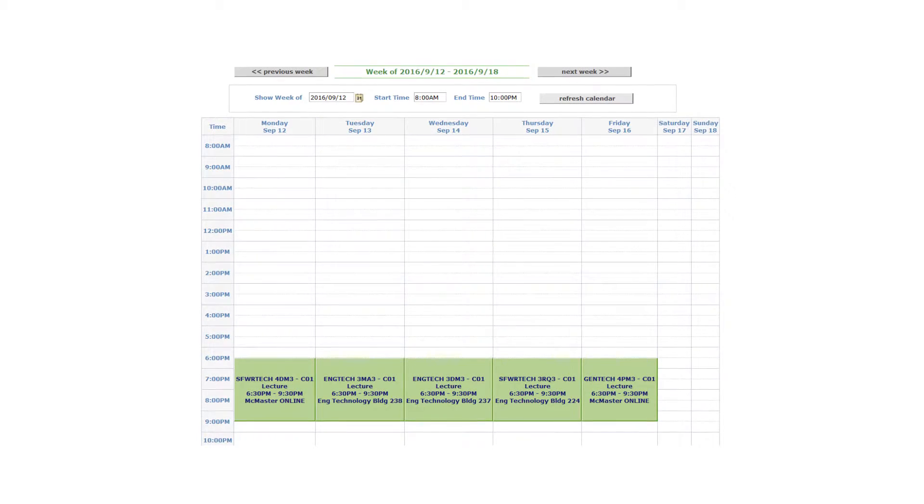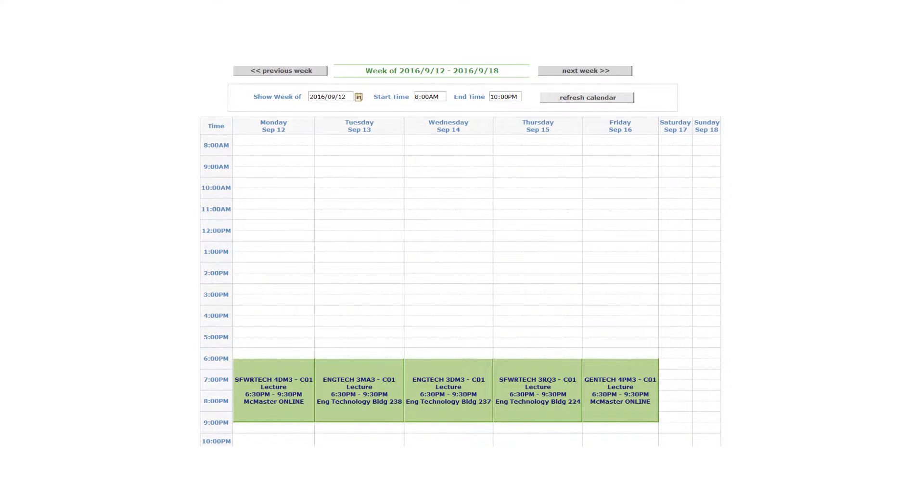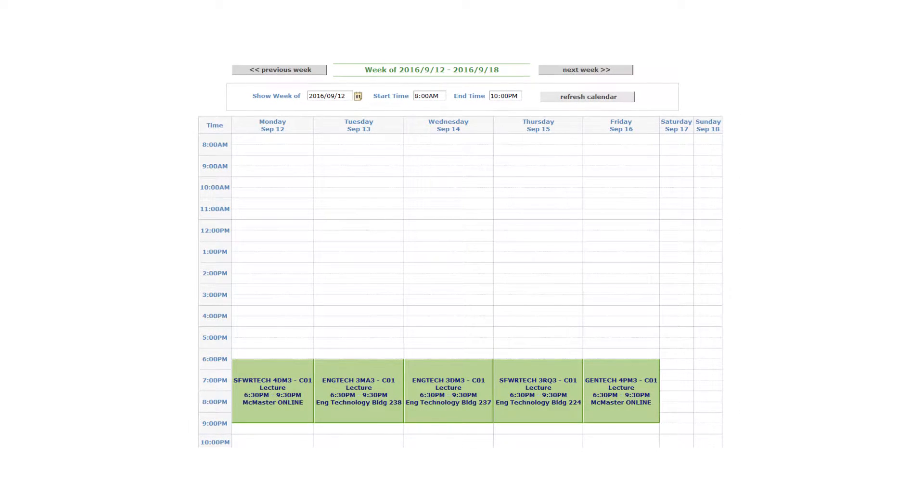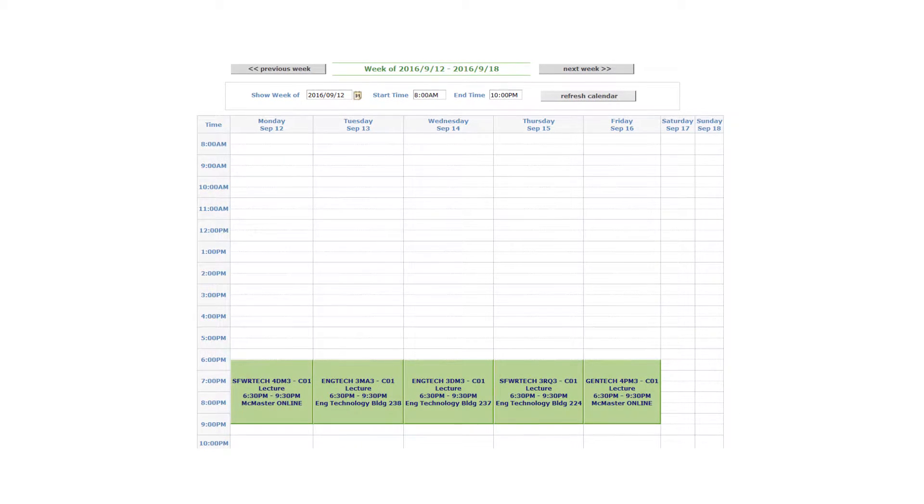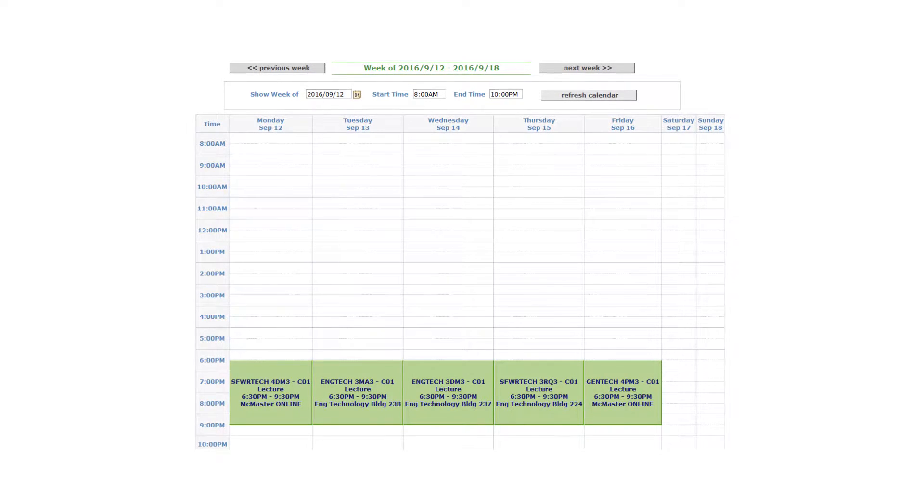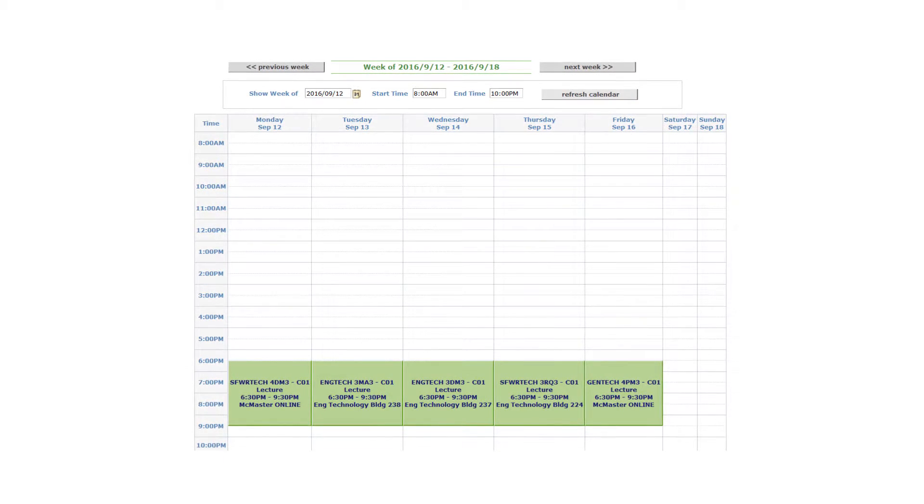Officially though, you would look in Mosaic. From your student center, if you click on the search for classes button, you can actually look by term and find out which courses are offered. An easy way to do that would be to look for your particular subject area by term and find out all of the courses offered in that subject.